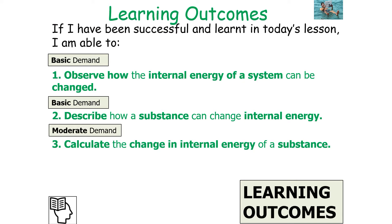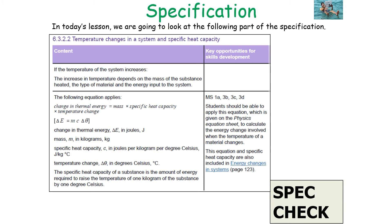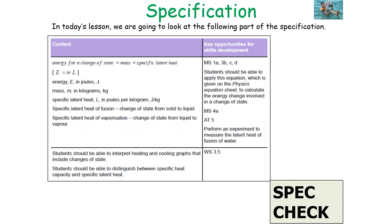If we are successful in today's lesson, we should be able to observe how the internal energy of a system can be changed, describe how a substance can change its internal energy, and calculate the change in the internal energy of a substance. This forms part of specification 6.3.2.2, covering temperature changes, specific heat capacity, and specific latent heat.